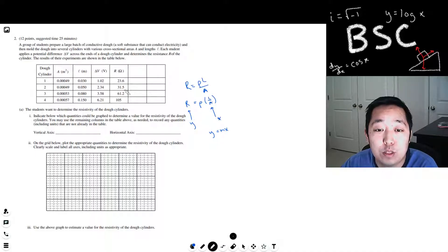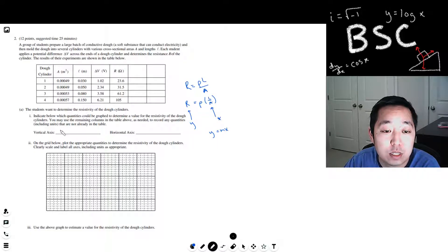So I want my Y value to be the R, the actual resistance, and my X value to be, so my vertical axis is going to be resistance R and the horizontal axis is going to be L over A, or I guess lowercase L over A, which would be meters to the negative one, that would be the units of L over A.